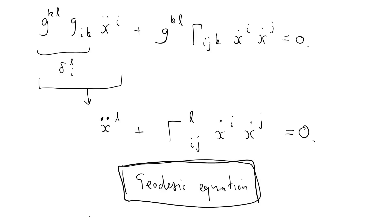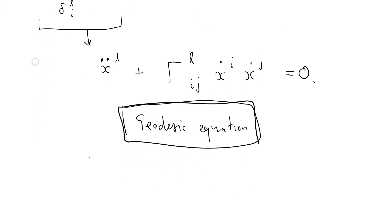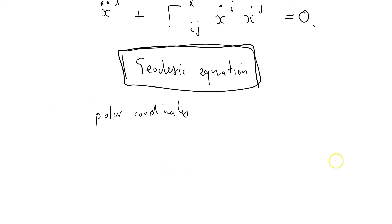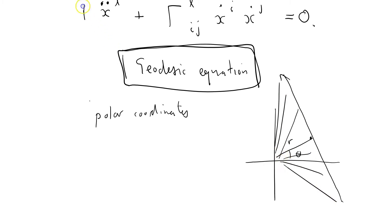In this general relativity step-by-step lesson, we have the geodesic equation. I'm going to give you an example by working in polar coordinates. A point is defined by its distance r and its angle theta, and I want to find what a straight line looks like — a geodesic — using this equation.